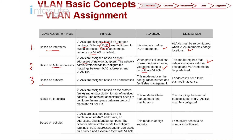Next, we have VLAN assignment based on subnet. We can assign VLANs based on IP subnet, which reduces configuration burden, but IP addresses need to be planned in advance. Security is not guaranteed here because changing the IP address would change the VLAN.